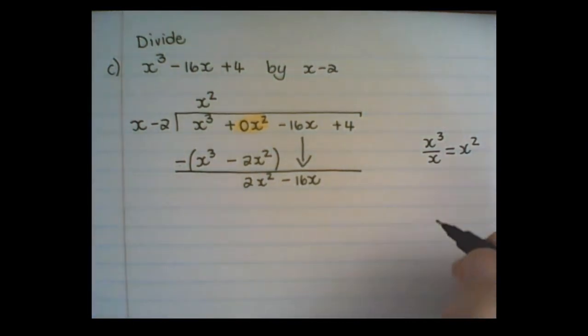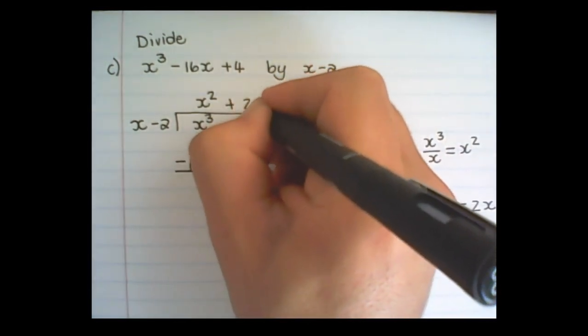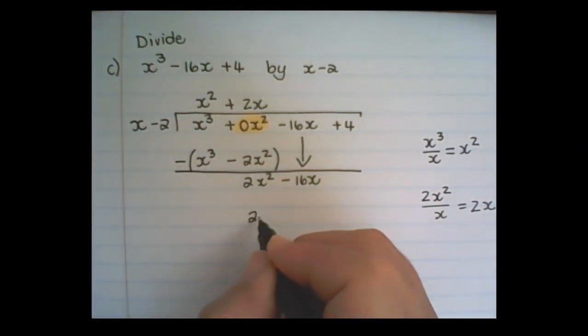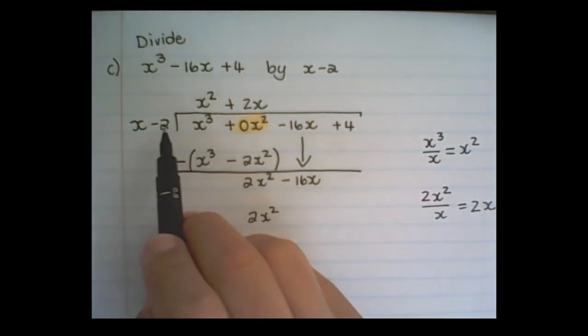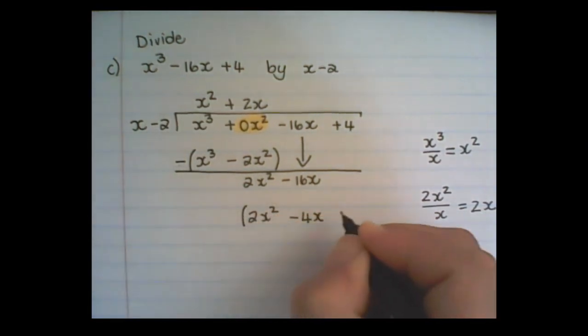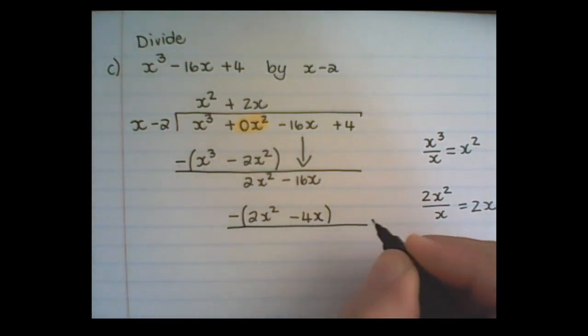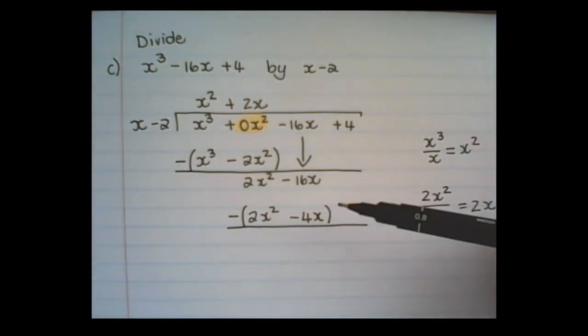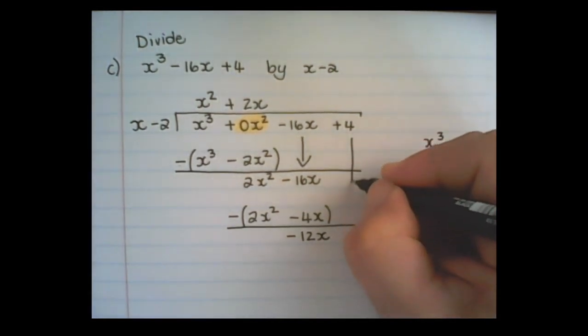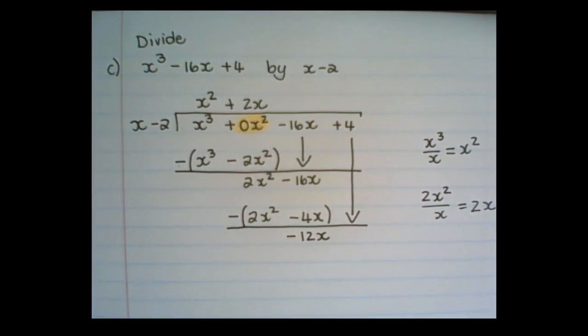And I repeat the cycle. So 2x squared divided by x is 2x. So it is plus 2x. Then multiply 2x with x, which is 2x squared. And 2x multiplied with negative 2 is negative 4x. And remember this is the part that we subtract. So the 2x squared will cancel each other out. And this is negative 16x plus 4x, which is negative 12x. And then I bring the 4 down.